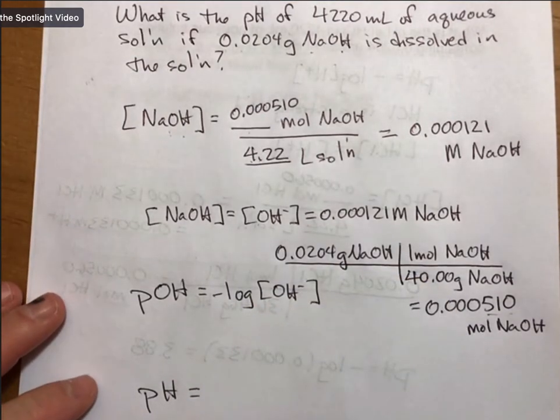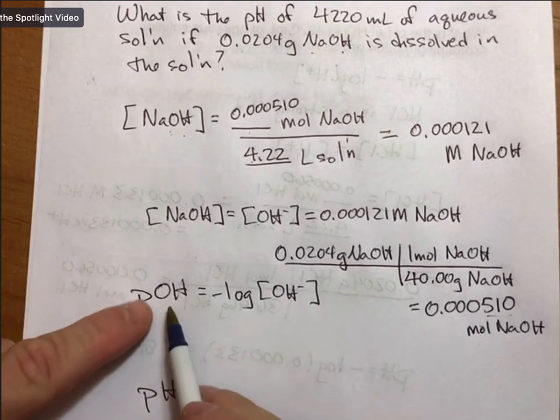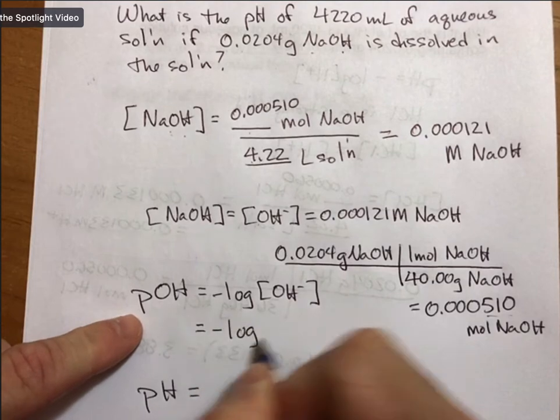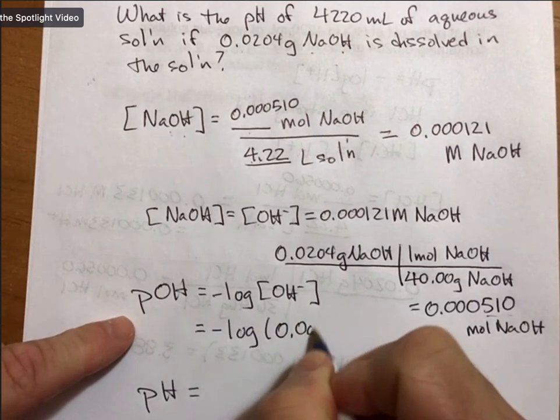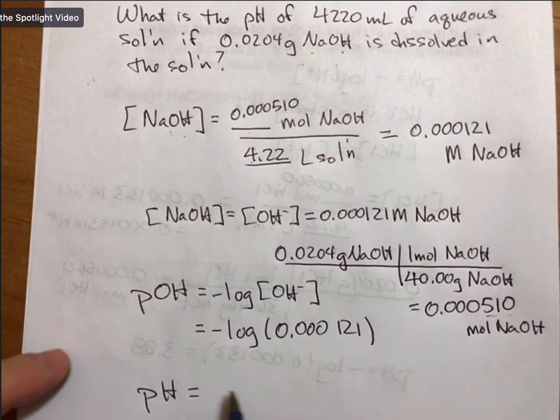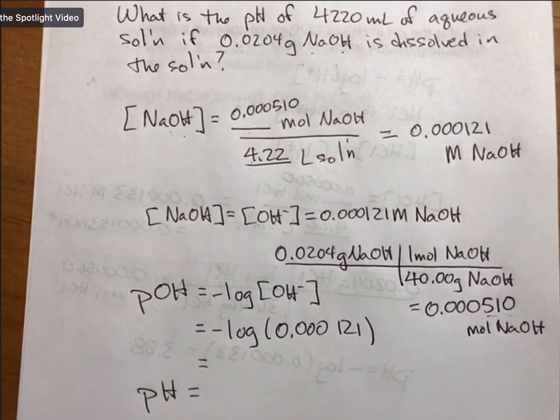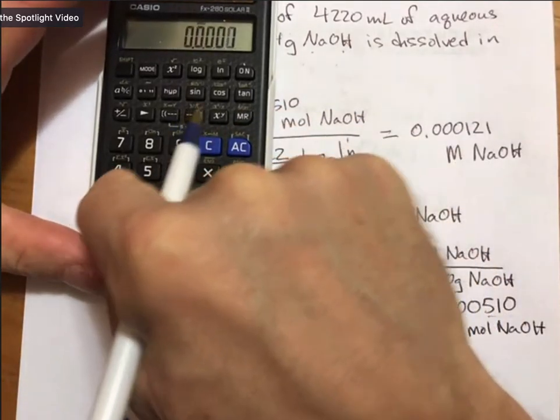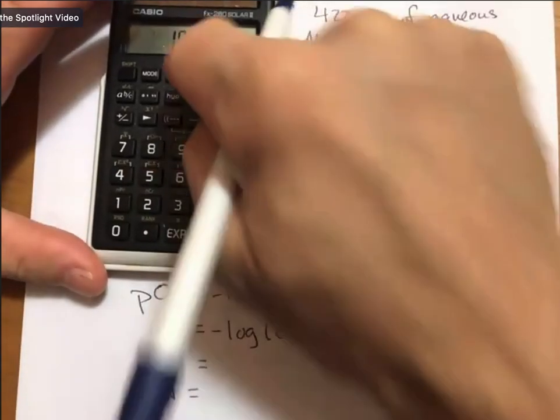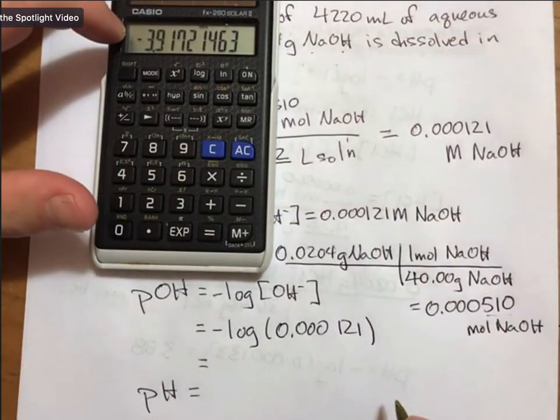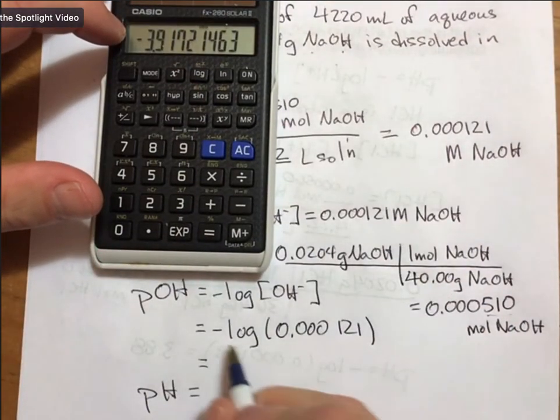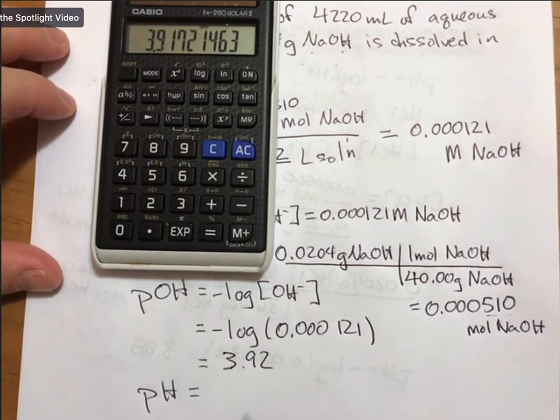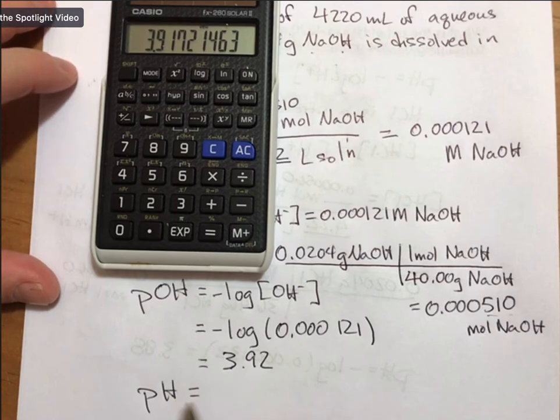Let's plug this in and talk about what number we get. So 0.000121, log of this is going to be minus 3.92. Take away the minus sign and you get 3.92.